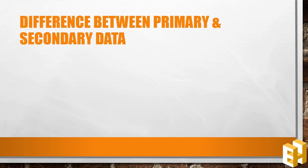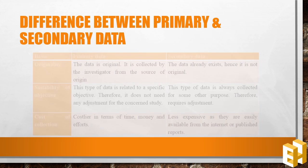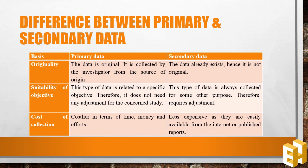What are the differences between primary and secondary data? Firstly, primary data is original and is collected by the investigator directly from the source of origin, while secondary data is the data which already exists and hence is not original. Secondly, primary data is collected to solve a specific objective and does not require any adjustments later on, while secondary data is already collected for some other purpose and requires further adjustments to suit your purpose.